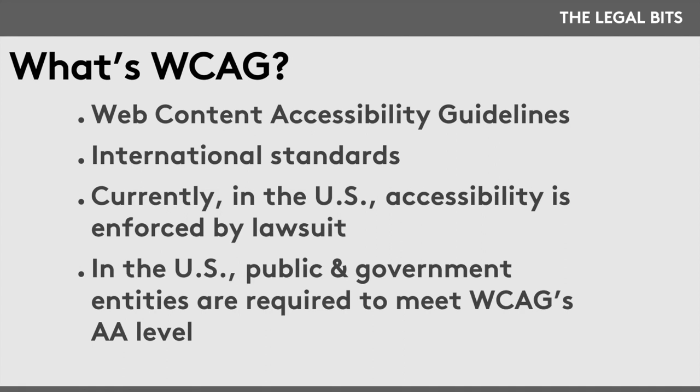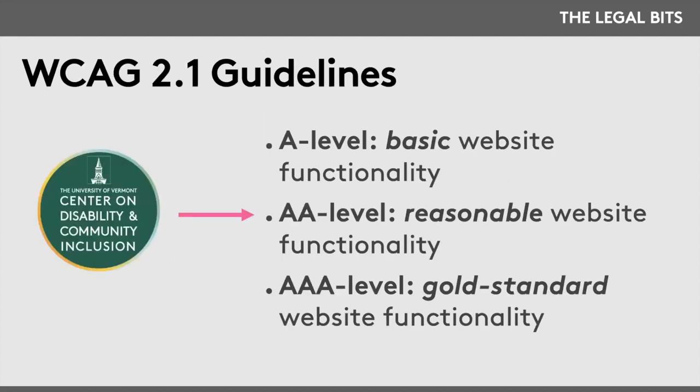In the United States, public and government entities are required to meet WCAG's AA level. The University of Vermont and the Center on Disability and Community Inclusion are covered by that. Single-A level means basic website functionality — if you're not meeting it, your website is broken and does not work for many people. Double-A level is what makes a reasonable website function. Triple-A level is the gold standard for website functionality.